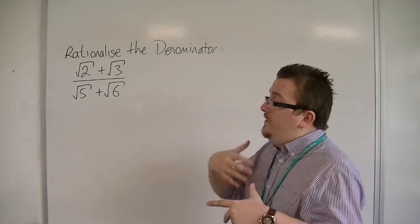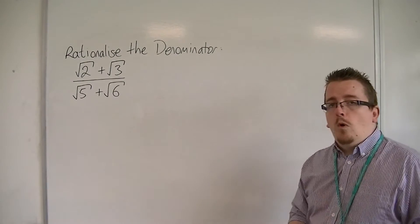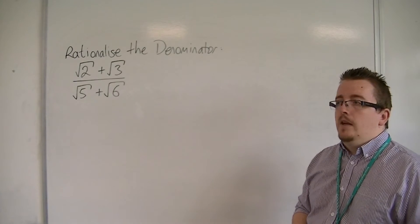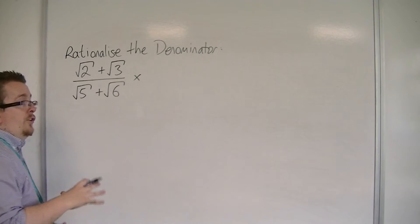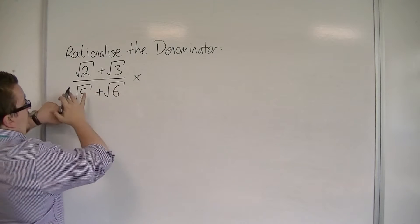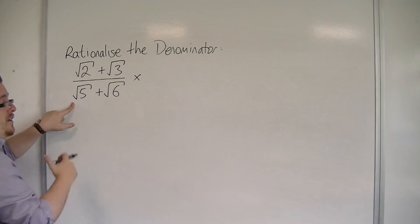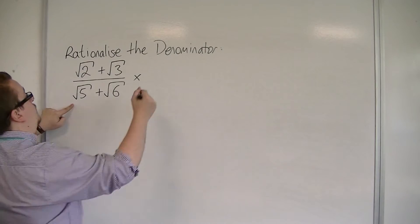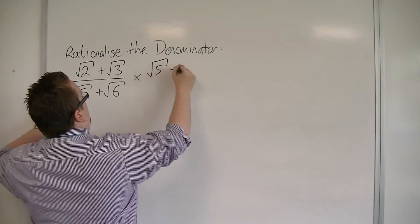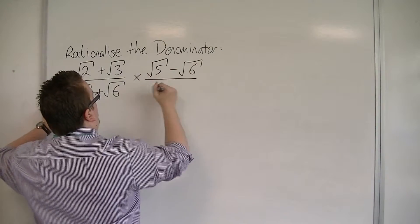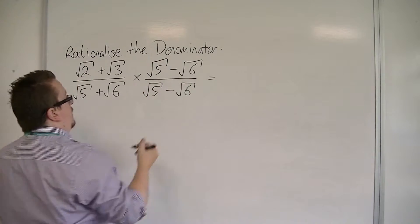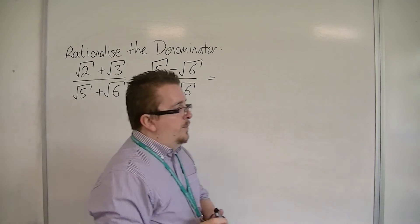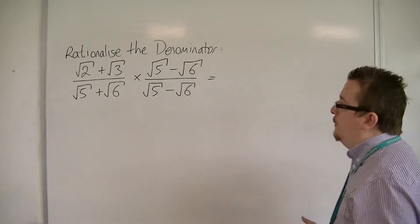we do it in much the same way as we've gone through the previous examples. So I'm going to multiply it by 1, multiplying it top and bottom by this denominator here, but with a sign change. So in exactly the same way, I've got root 5 take away root 6 over root 5 take away root 6. It doesn't look any nicer at this point, but that will be the method that we're going to be using.